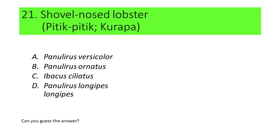This species is commonly called shovel-nosed lobster. Locally, this is called pitik-pitik or kurapa. A. Panoleros versicolor, B. Panoleros ornatus, C. Ibacus ciliatus, and D. Panoleros longgipes. Can you now guess the answer?